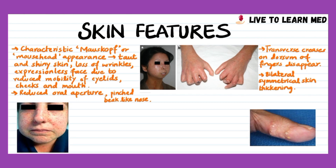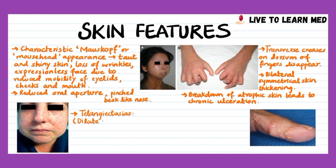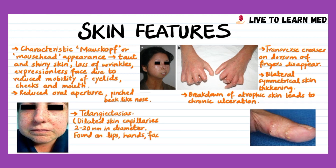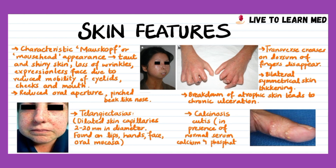Bilateral symmetrical skin thickening is the hallmark of systemic sclerosis. Breakdown of atrophic skin leads to chronic ulceration. Dilated skin capillaries, usually 2 to 20 millimeters in diameter, are referred to as telangiectasias and are frequently found on lips, hands, face, and oral mucosa; their number correlates with severity of microvascular disease including pulmonary arterial hypertension. Dystrophic calcifications in the skin, subcutaneous, and soft tissue are referred to as calcinosis cutis and occur in the presence of normal serum calcium and phosphate levels.